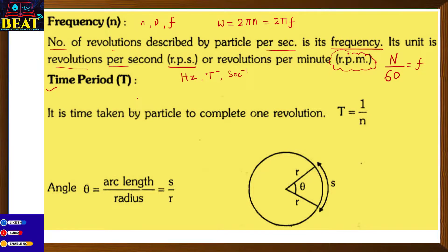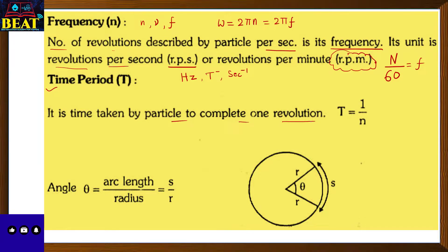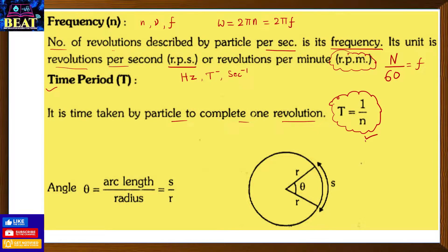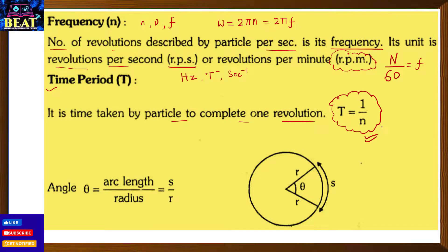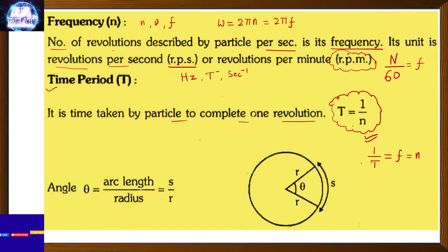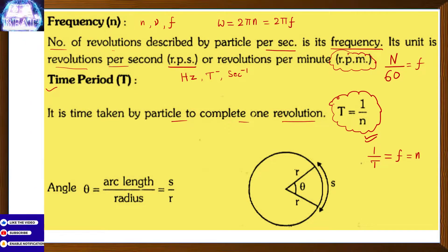Time period is defined as the time taken by the particle to complete one revolution. Time period T equals 1 upon frequency (f), and frequency equals 1 upon time period. The unit of time period is seconds, and the unit of frequency is hertz (inverse seconds).